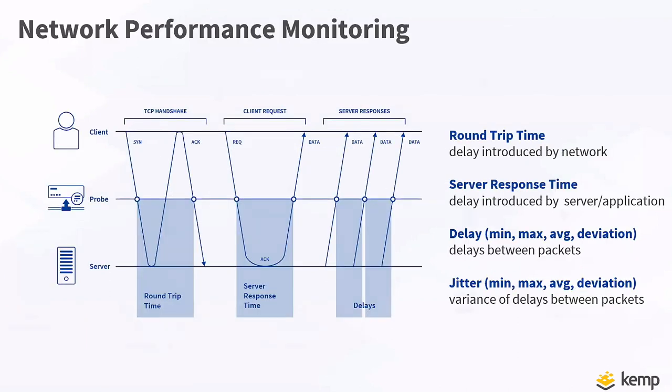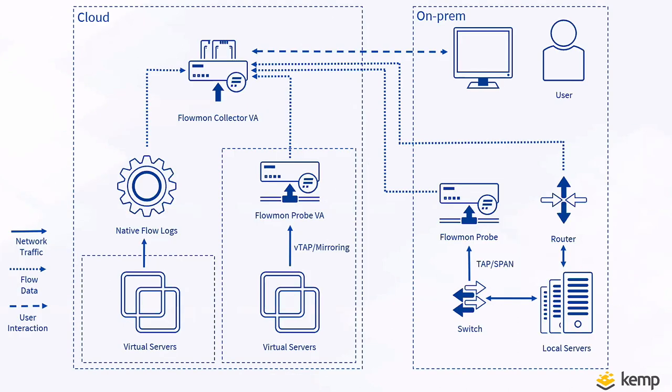Chris asks: can we take the flow data generated by the Flow Mode probe — so it's taking actual traffic, doing a packet capture, and turning that into flow data — and ingest it not only in the Flow Mode collector but also in other flow collection tools? Exactly. You can feed multiple systems in parallel with flow data in multiple different formats simultaneously. It's like a Swiss army knife for the network.